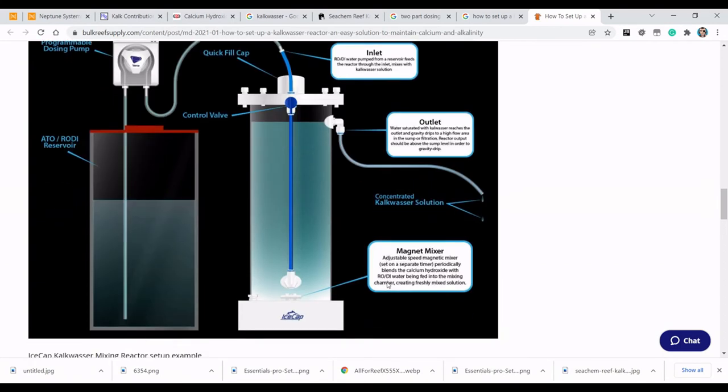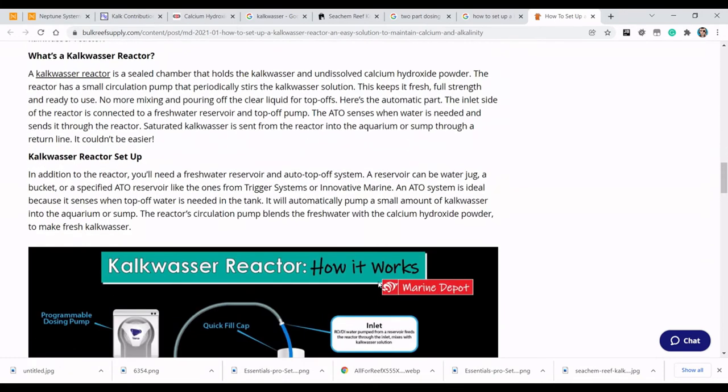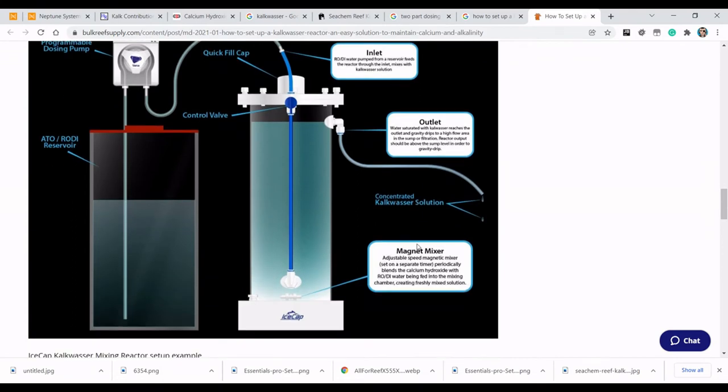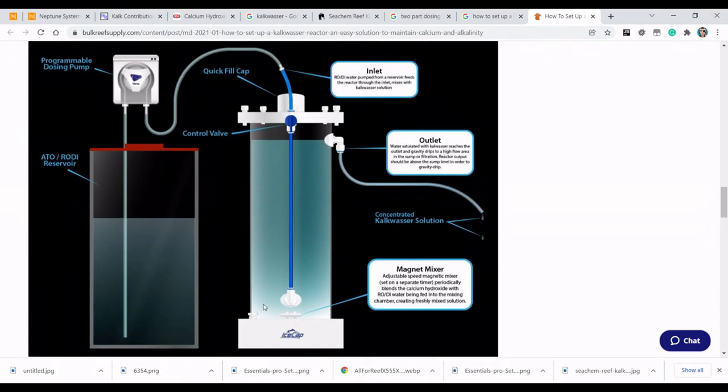So how am I going to actually implement this Kalkwasser stirrer onto my aquarium? If we go to the Bulk Reef Supply website, they've got a good diagram here that illustrates it fairly well. What happens is you have a continuous duty dosing pump that will draw water up from your ATO reservoir. Push that water into the Kalkwasser stirrer, which will then feed fresh water into the bottom of the vessel. This will push the clear saturated Kalkwasser out of the top outlet, which will then slowly drip into your tank.